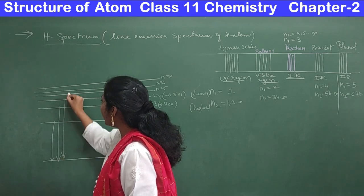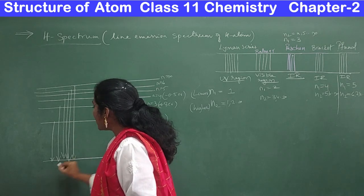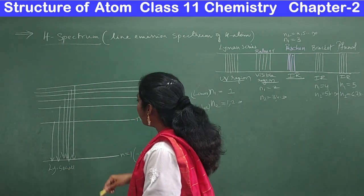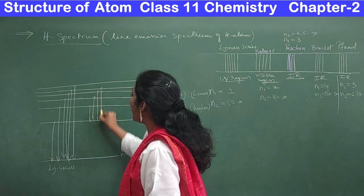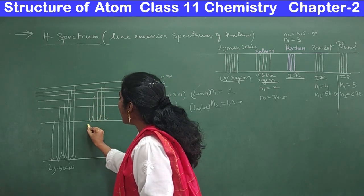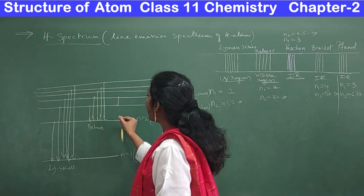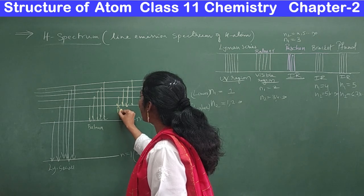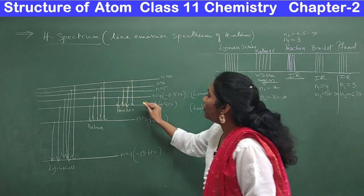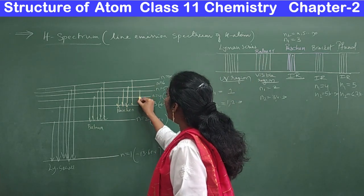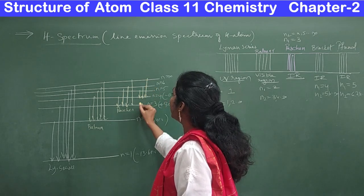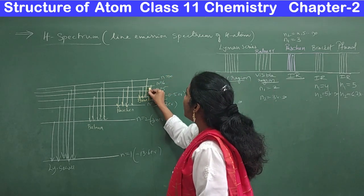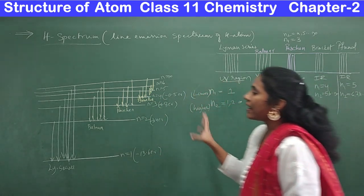If the electron is coming back to the first energy level from whichever shell, that is the Lyman series. If the electron is coming to the second energy level from higher shells, that is the Balmer series. If it is coming to the n=3 shell, that is the Paschen series. If the electron comes to the n=4 shell, that is the Brackett series. For the Pfund series, you draw transitions ending at n=5.